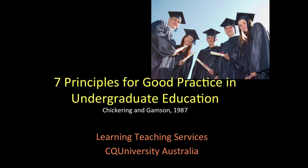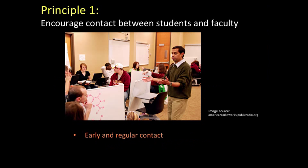This presentation has been designed to help you understand the seven principles. The first principle suggests that we encourage contact between students and faculty. The research shows that there is a positive relationship between the level of contact between students and teaching staff and student performance. And the earlier we establish this contact, the better.